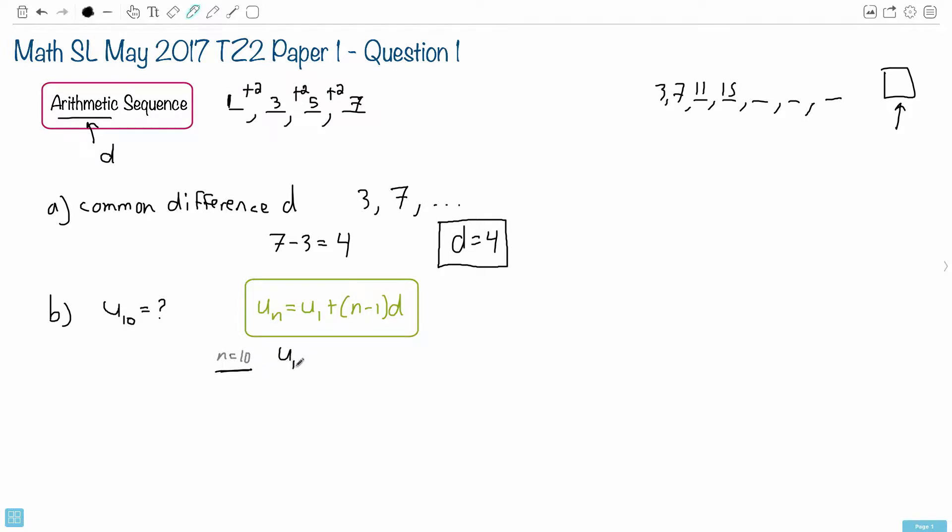Let's put in what we want here. U₁₀ equals U₁, and the first term is 3, the first term of this sequence. So we put 3 plus, and then instead of n minus 1, it's 10 minus 1, all that times d. D is the common difference, which we just found, which is 4.